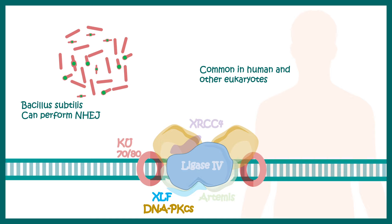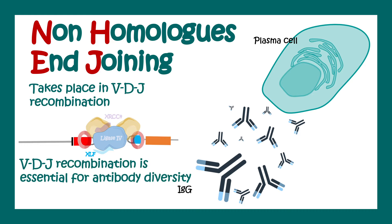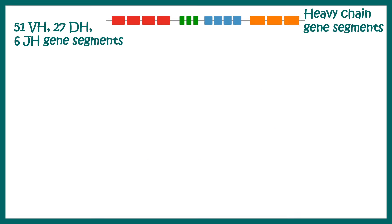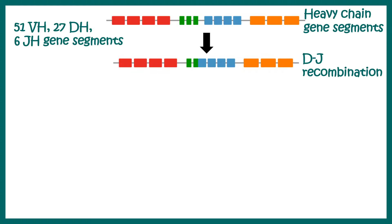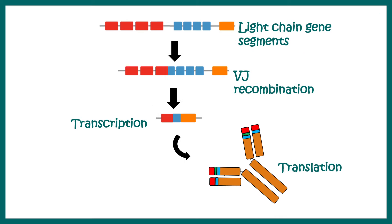Non-homologous end joining can be found as an underlying mechanism of VDJ recombination, which is super important to produce antibody diversity and is critical for B cells. In VDJ recombination there are multiple V, D, and J segments which are recombined in a particular fashion. First there is DJ recombination, then VDJ recombination, leading to production of a specific variable segment. Different antibodies have different variable segments, which leads to antibody diversity — and this is true for both heavy chain and light chain.